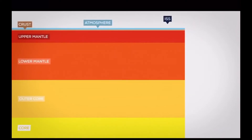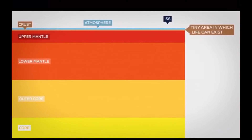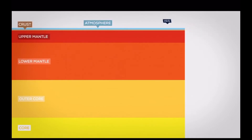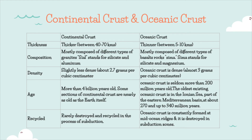To give you some perspective: the crust is a very small layer, and this is where we live. It is a tiny area in which life can exist. This brings us to our last topic, which is the difference between the continental crust and the oceanic crust.